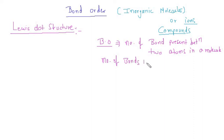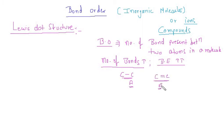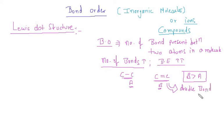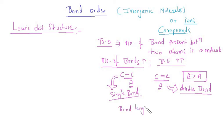If the number of bonds increases, the bond energy also increases. For example, if carbon-carbon single bond has bond energy A, and carbon-carbon double bond has bond energy B, then B is greater than A. Because as bond multiplicity increases, bond energy also increases. Also, as bond length increases, bond energy decreases.